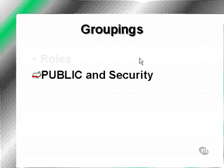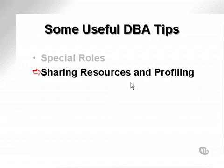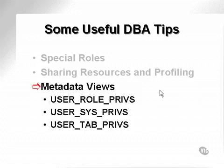It is advisable to use the public user group cautiously. Some useful DBA tips: there are a large number of special roles included when Oracle is installed. The obvious one is the DBA role, which gives you more or less access to everything. Another interesting role is the select catalog role, which can be granted to a user, allowing access to all the Oracle metadata views. It is possible in Oracle to share resources using profiling — resources such as CPU time and memory, where percentages of those resources are allocated to specific profiles, and then those profiles can be allocated to users. There are a number of metadata views useful to interrogate privileges, namely role privileges, system privileges, and tab privileges.